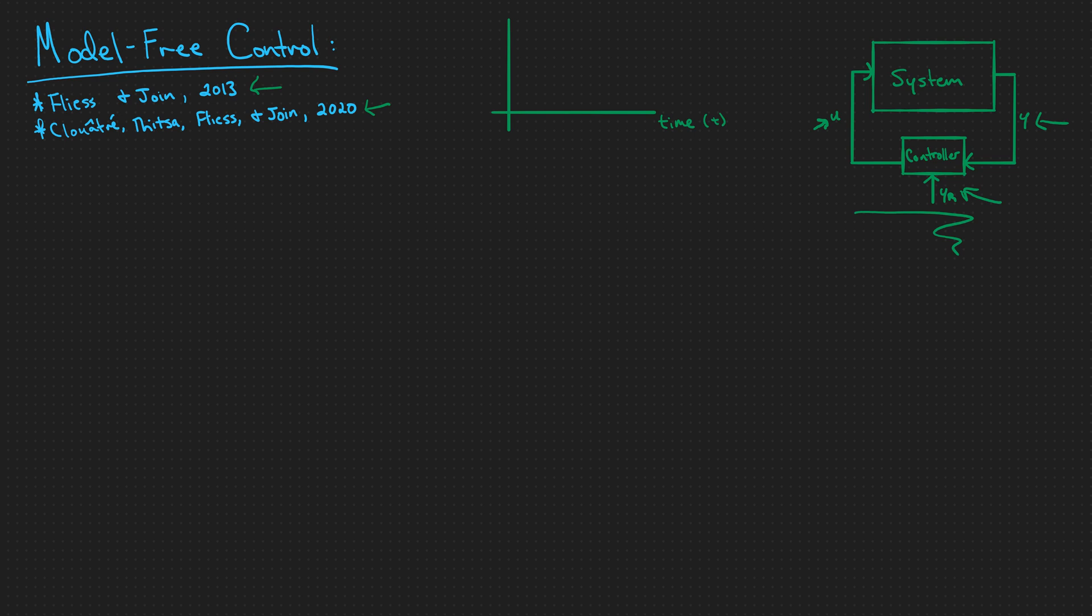However, if we don't have a model of the system's dynamics, this becomes quite difficult. To show this on a graph, imagine we have a reference trajectory y sub r. We would want the output of our system to follow this reference as close as possible.